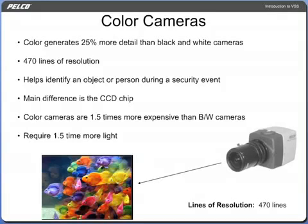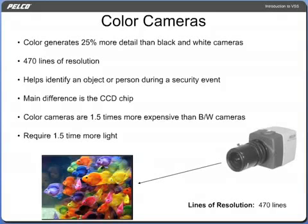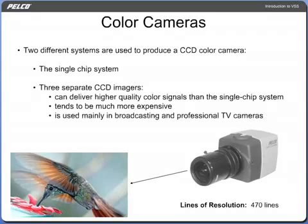Color generates 25% more detail than black and white cameras, and this increased detail helps when trying to properly identify an object or person during a security event. It has 470 lines of resolution. The main difference between a black and white and color camera is the CCD chip. Color cameras are 1.5 times more expensive than black and white cameras and require 1.5 times more light. Two different systems are used to produce a CCD color camera: the single chip and the three separate CCD imager systems.